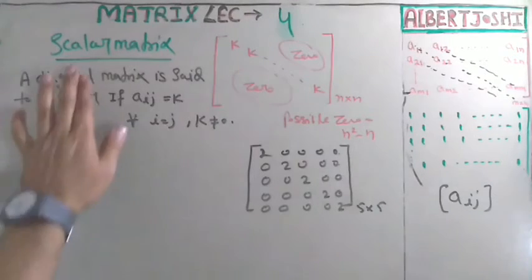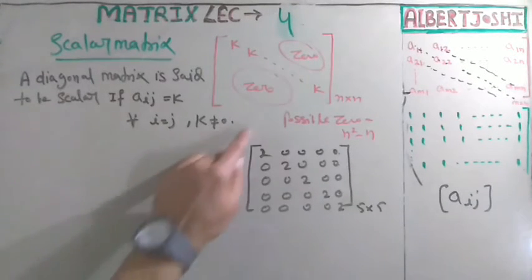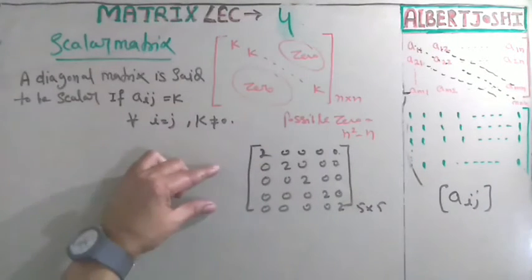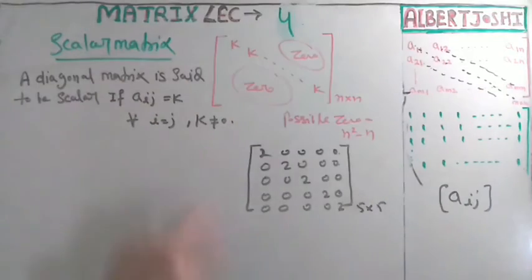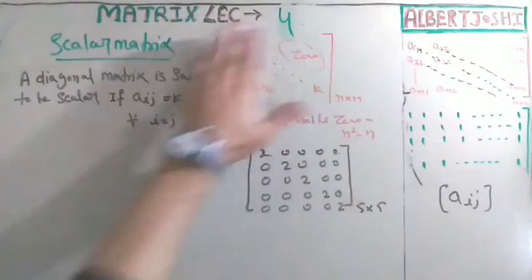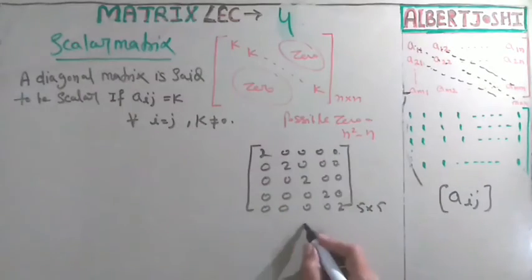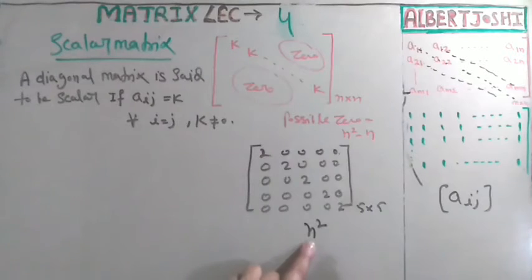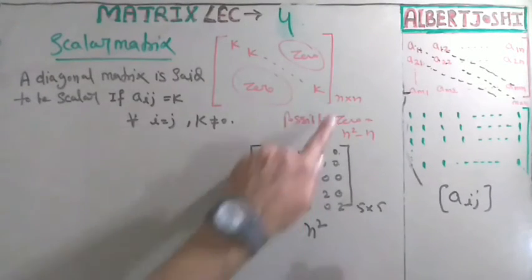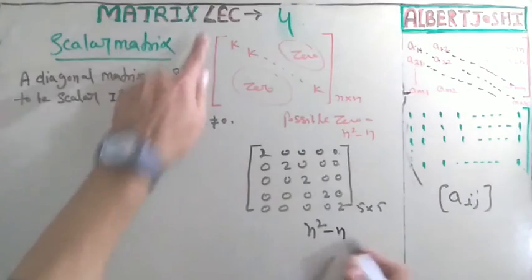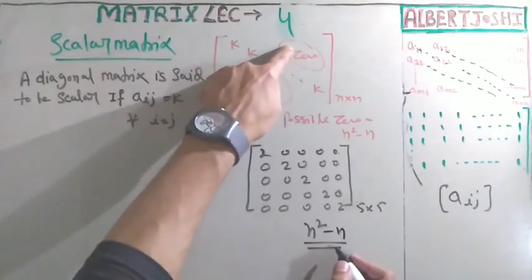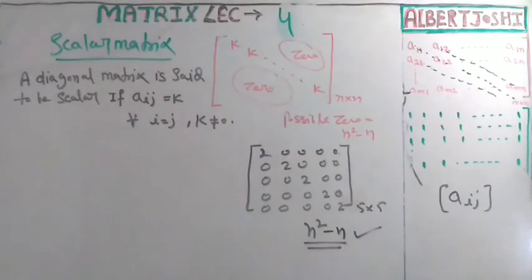Now the question they will ask: what are the possible zeros in the scalar matrix? The possible zeros equals n times n equals n squared. The total number of elements that can be placed in a square matrix is n squared. If you subtract n from this, then n squared minus n is the total number of possible zeros.